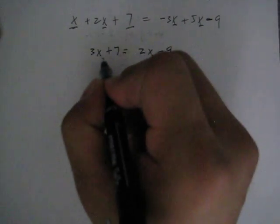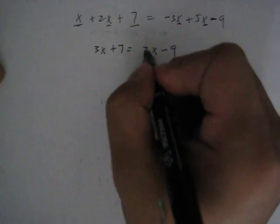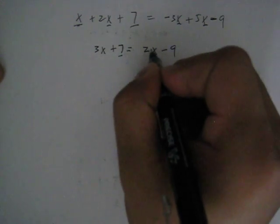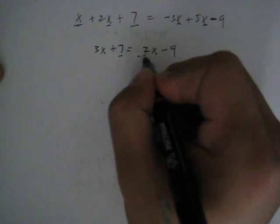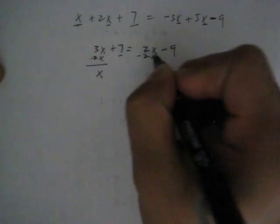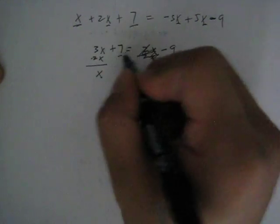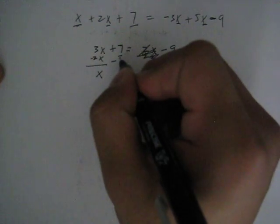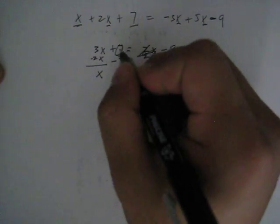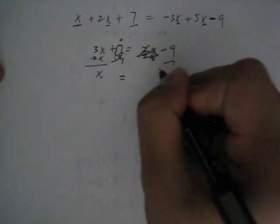Now we've grouped both sides. We want all the variables on one side and all the numbers on the other. To move this 2x over, we subtract 2x from both sides. 3x - 2x = x, and this is cancelled out. To move the 7 over, we subtract 7. 7 - 7 = 0, and -9 - 7 = -16, so x = -16.